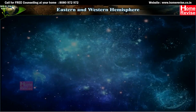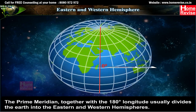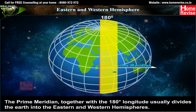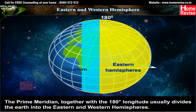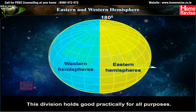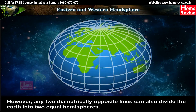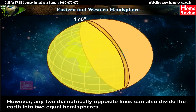Eastern and Western Hemisphere: The prime meridian together with the 180-degree longitude divides the earth into the Eastern and Western Hemispheres. This division holds good practically for all purposes. However, any two diametrically opposite lines can also divide the earth into two equal hemispheres.